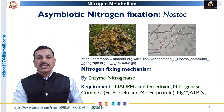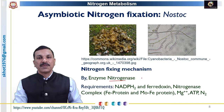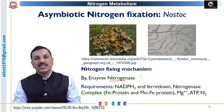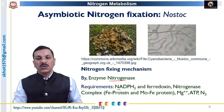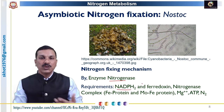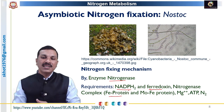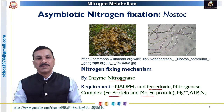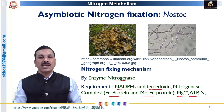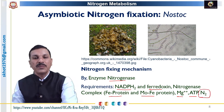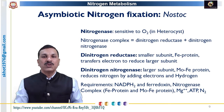Nitrogen fixation occurs in heterocysts and is carried out by the nitrogenase enzyme. Nitrogenase is a complex enzyme that works with cofactors including NADPH₂ (the reducing power) and ferredoxin (the electron donor). The nitrogenase complex has two subunits: a smaller subunit called the iron protein, and a larger subunit called the molybdenum-iron protein. In addition, it requires the catalyst magnesium ion, the energy source ATP, and the raw material nitrogen. In association with all these cofactors, the nitrogenase enzyme carries out nitrogen fixation.